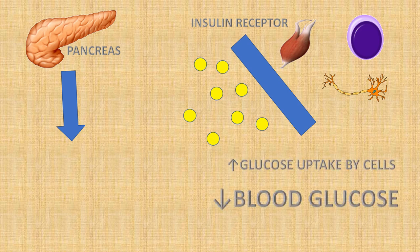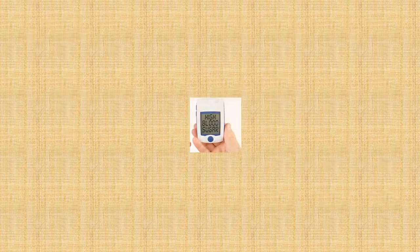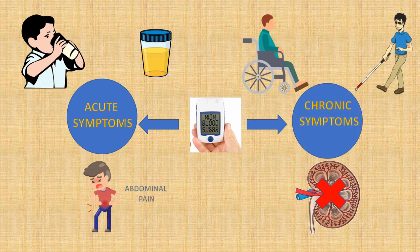But for reasons such as genetics, inflammation, or obesity, diabetes occurs either when the pancreas loses the ability to produce insulin or if the body becomes unable to respond to the hormone. A raised glucose level can cause acute symptoms like excessive urination, which can eventually kill a person, or more longer term complications like blindness, paralysis, or kidney failure.